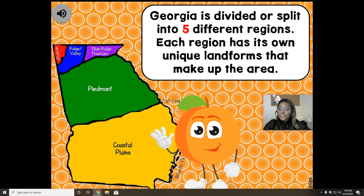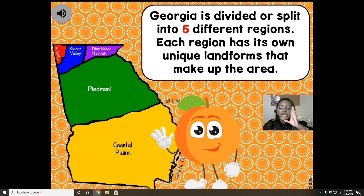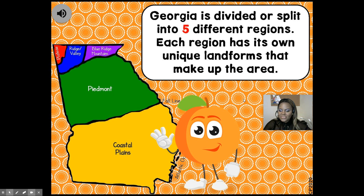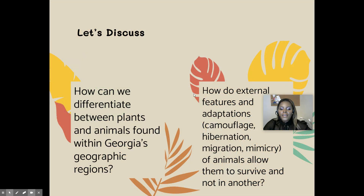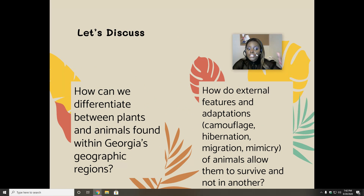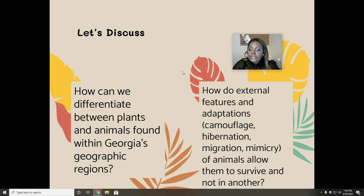Georgia is divided or split into five different regions. Each region has its own unique landform ecosystem that makes up the area. Now, we discussed in class how we can differentiate between plants and animals found within Georgia's geographical regions. We also discussed the adaptations — camouflage, hibernation, and the different types of adaptations animals take to survive in their habitats.